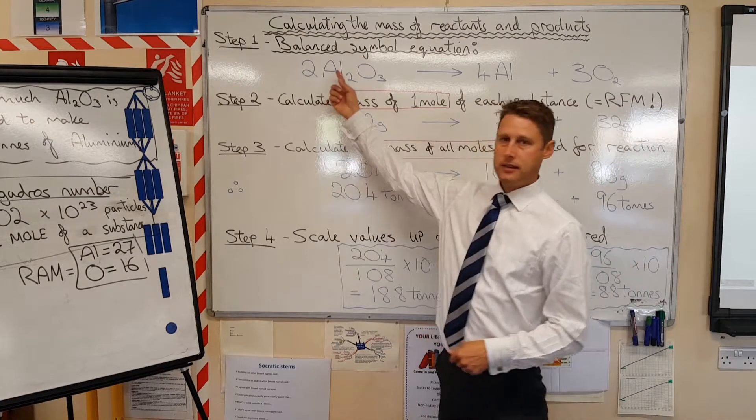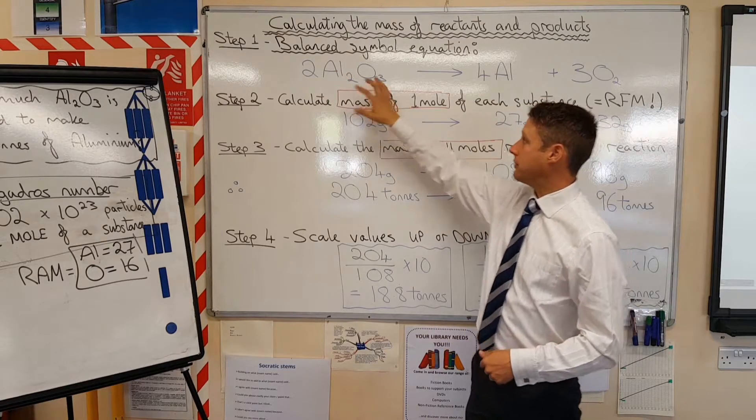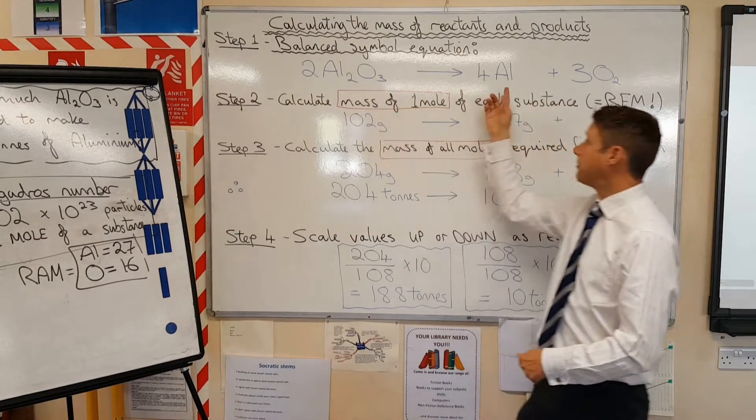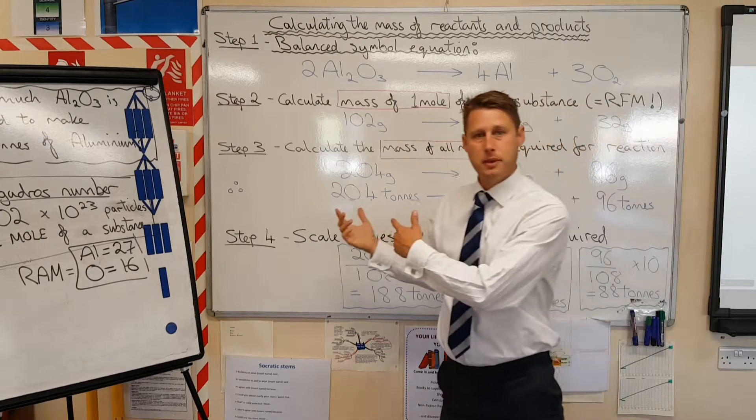Step number one. You need a balanced symbol equation, which we have here. Already balanced that for you. Higher tier, you're probably going to need to be able to do that yourself.